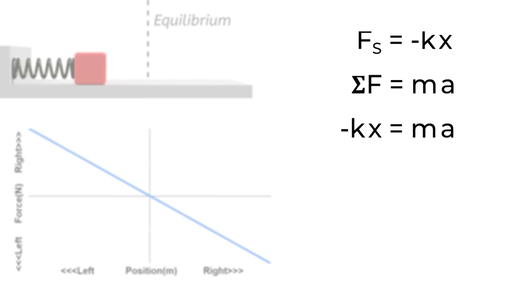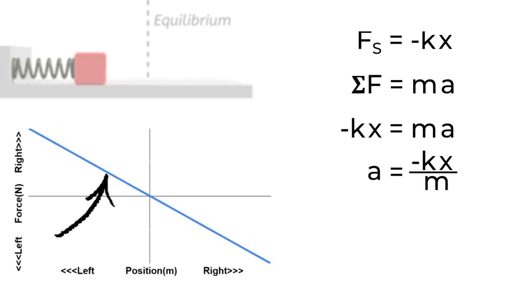We just have the force by the spring causing the block's mass to accelerate. Rearranging this, we can get an equation for the acceleration of the block. Going back to the graph, you'll see the farther the block gets from equilibrium, the greater the force by the spring becomes. What that means is as the block gets farther and farther away from equilibrium, the acceleration of the block is going to increase.